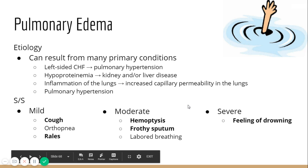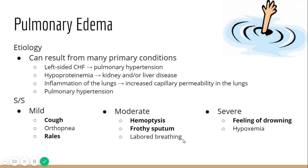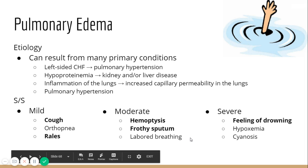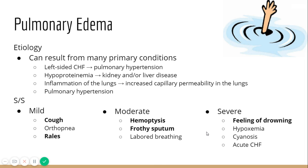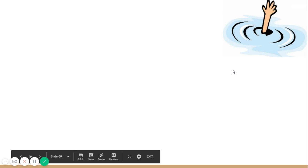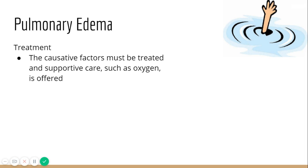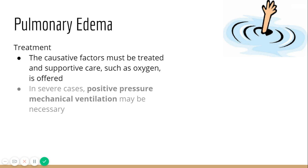With severe pulmonary edema, patients feel like they're drowning — which is why we have that drowning image. Oxygen levels in their blood will be very low and they will appear cyanotic. They can also develop acute congestive heart failure from all of this. For treatment, we want to address whatever caused the pulmonary edema to begin with, and supportive therapy such as oxygen is very beneficial.